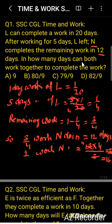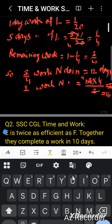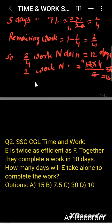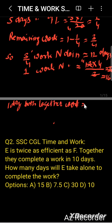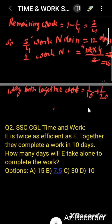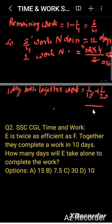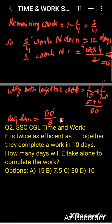Now, in how many days can both work together? One day's work of both together equals 1/16 plus 1/20. The LCM of 16 and 20 is 80, so this becomes 5/80 plus 4/80, which equals 9/80. So the required result is the reciprocal, which is 80/9.